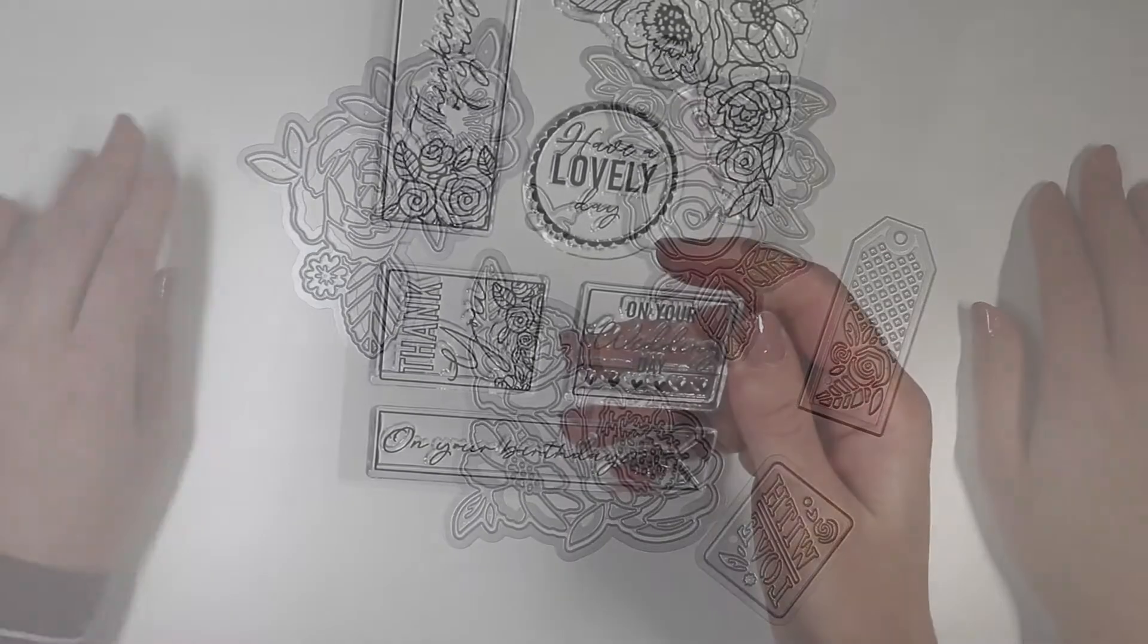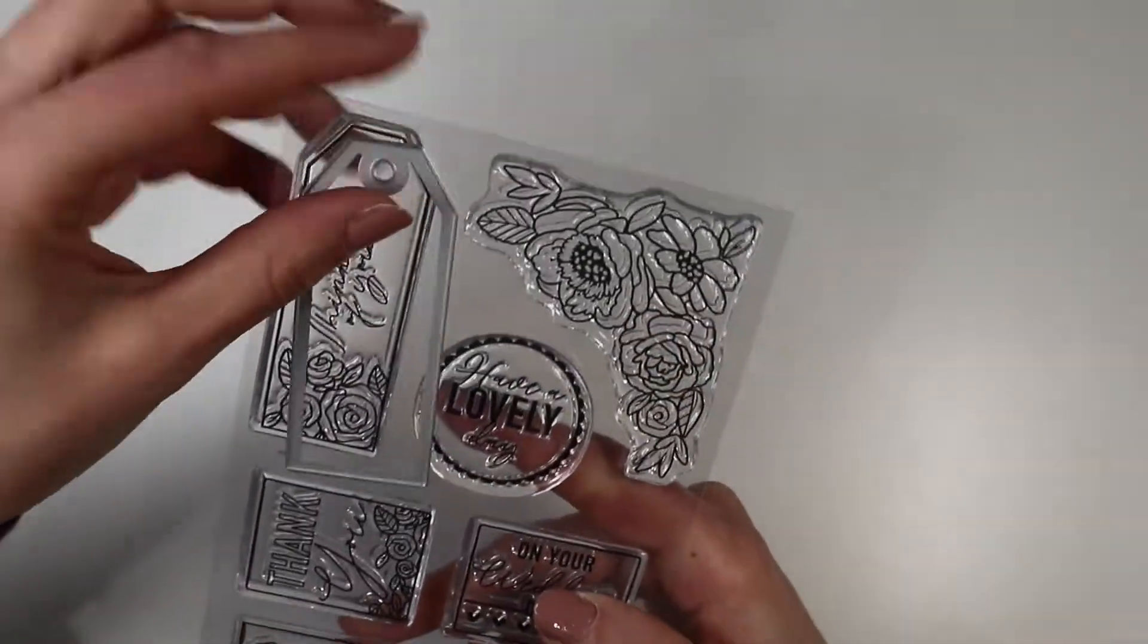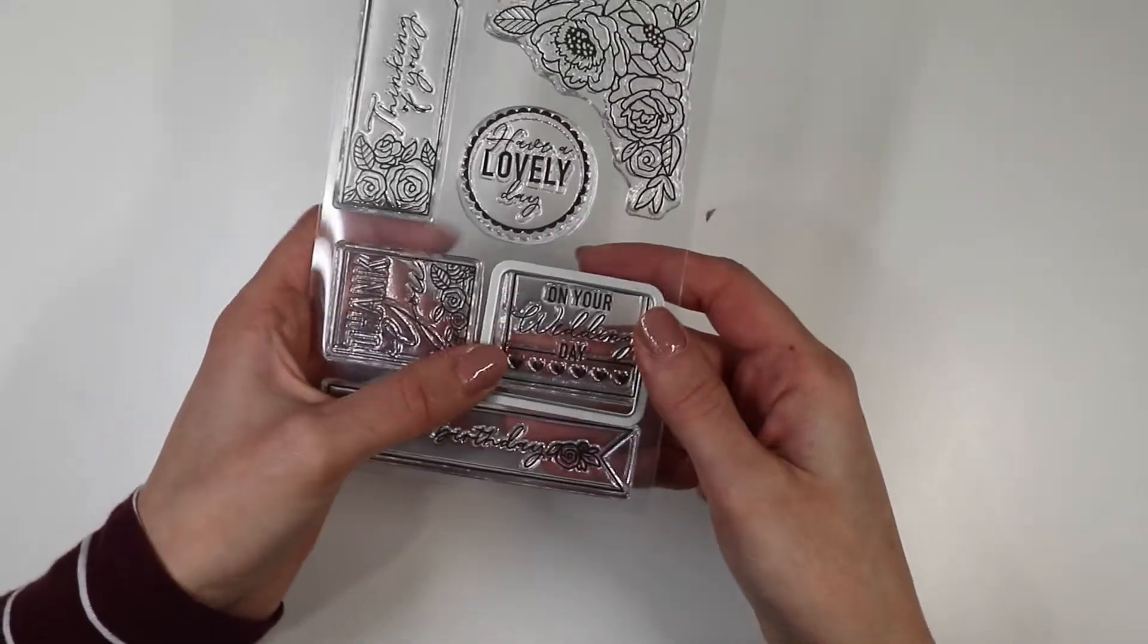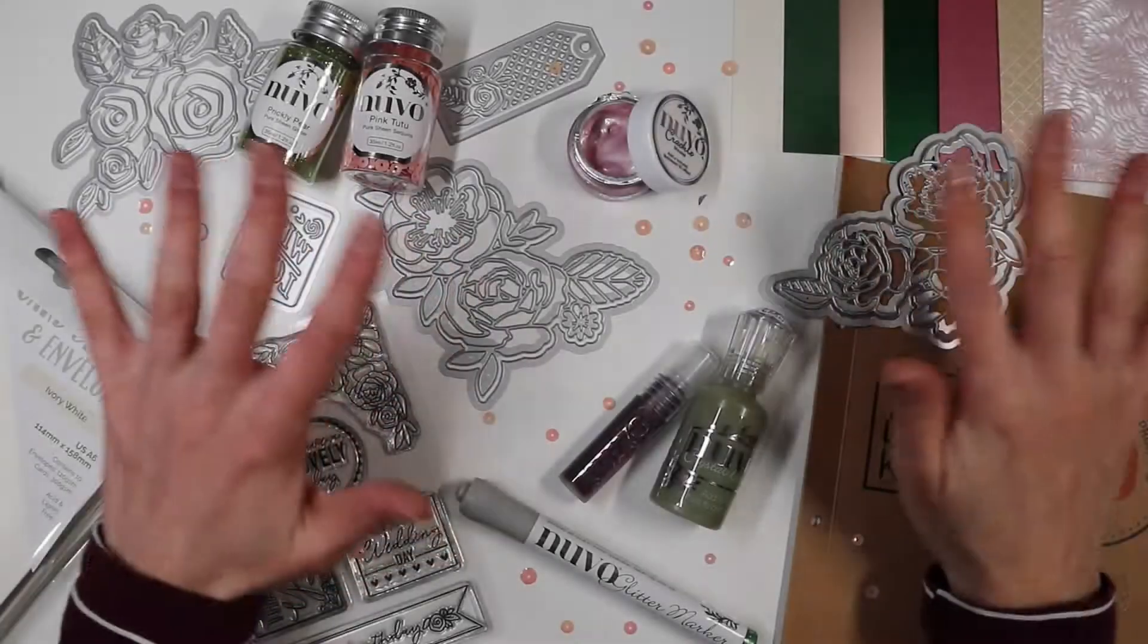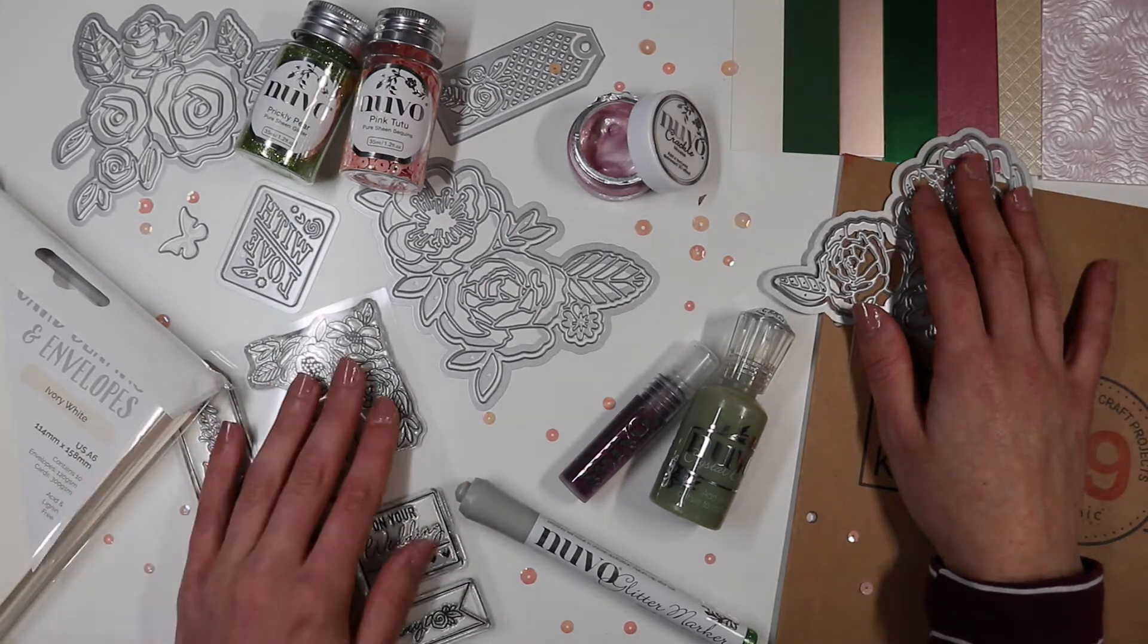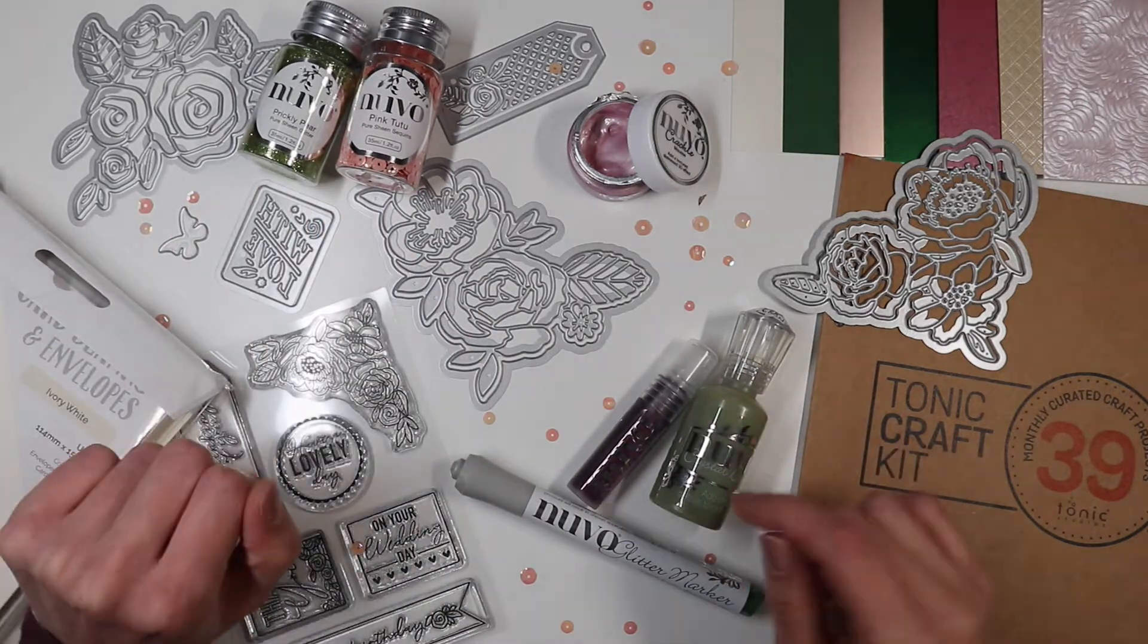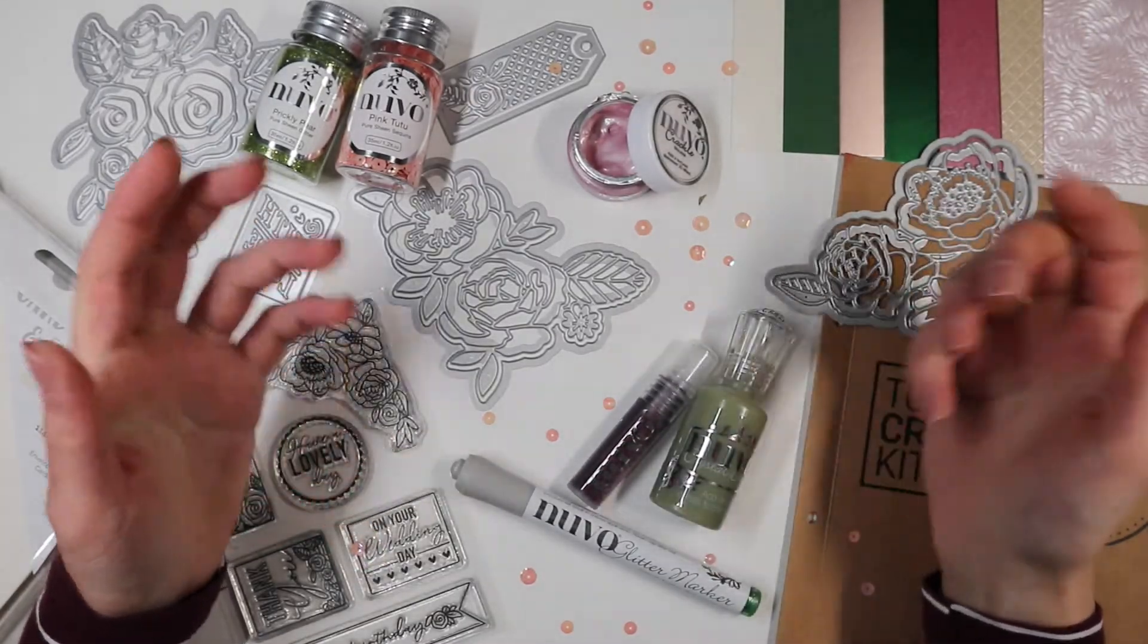We finish unboxing with the stamp set, which contains a lot of sentiments, some of which are coordinated with the dies, and a floral corner stamp. This is the Tonic Craft Kit 39. I remind you that dies and stamps cannot be bought separately. For all the other products in the kit that I will use in the video, you will find the list with the links below in the description box and on my blog if you are interested in any of them.